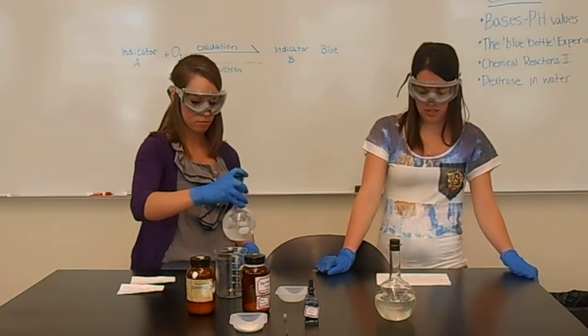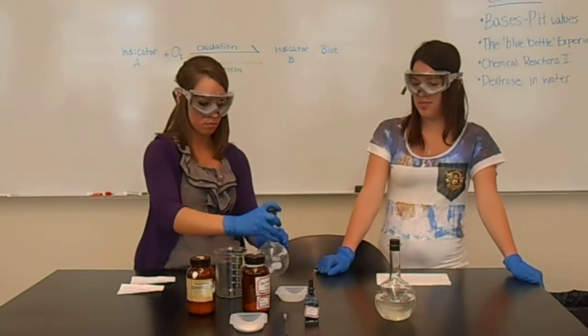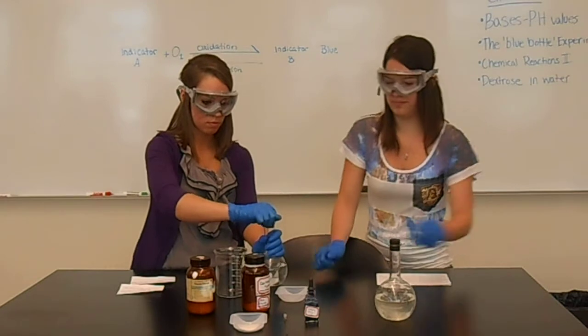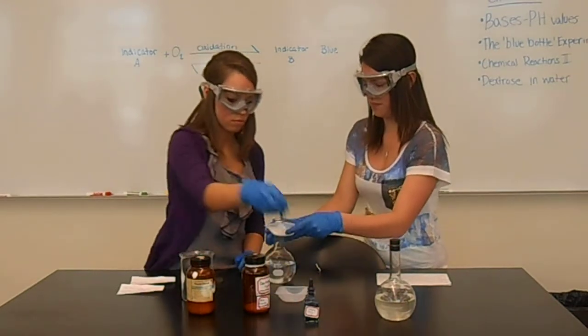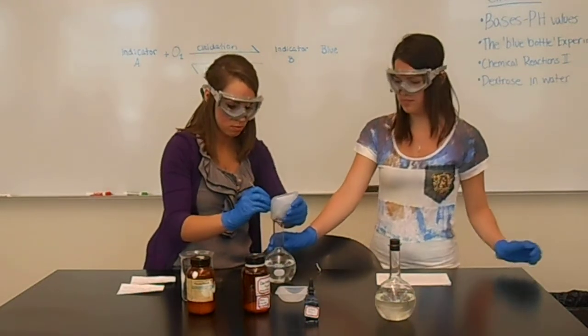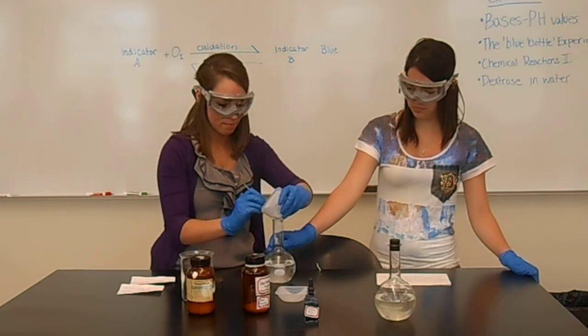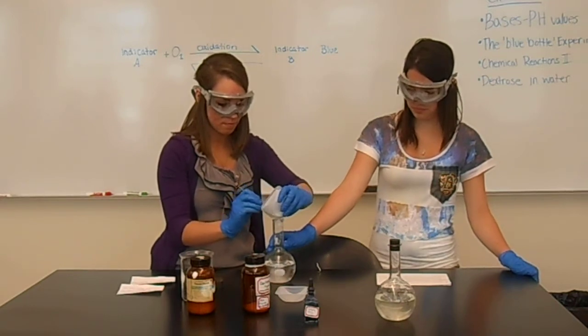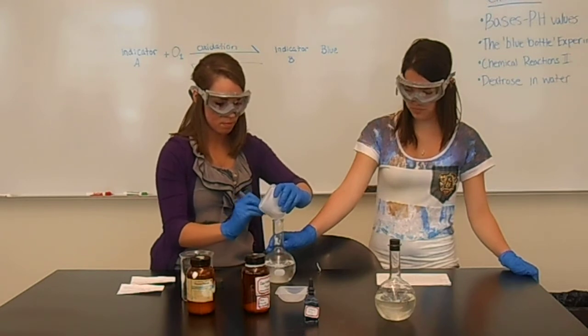After this dissolved, you will then dissolve the 10 grams of dextrose into the potassium hydroxide solution.